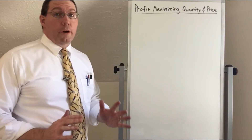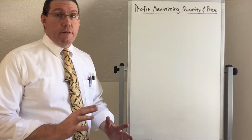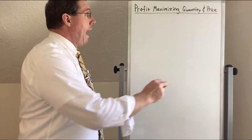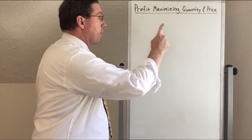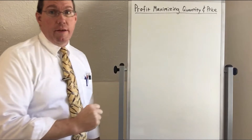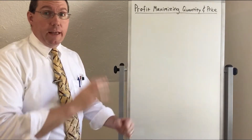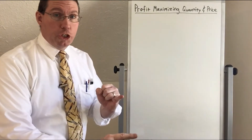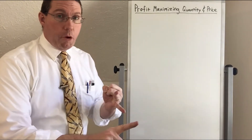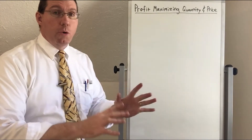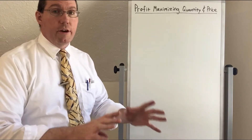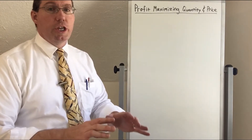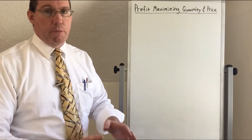Now what we're going to do is bring all those lessons together into this final lesson where I show you how to identify the profit-maximizing quantity and price. Remember what I said at the very beginning — this is the goal of the business: to decide how much should we produce and what price should we charge. Those two decisions are what will decide whether a business achieves its maximum possible profit.